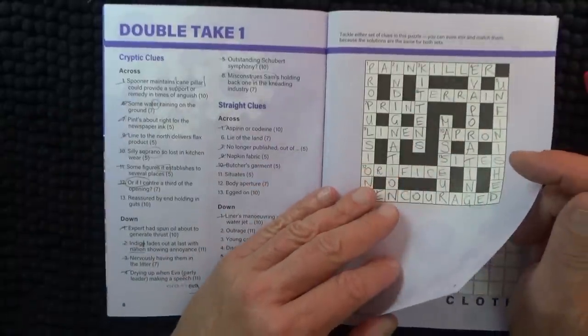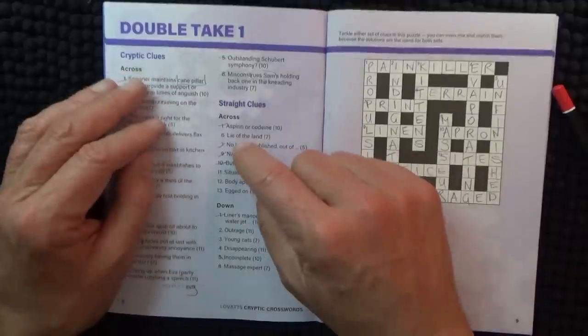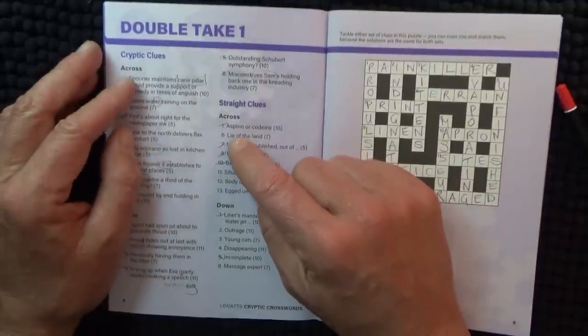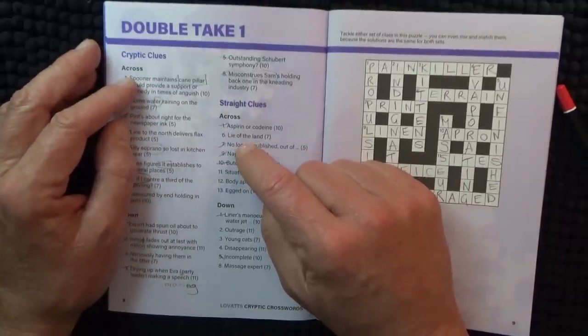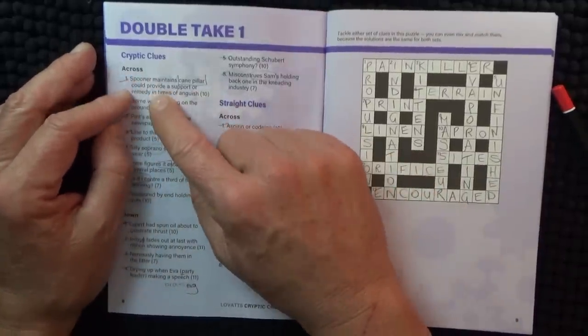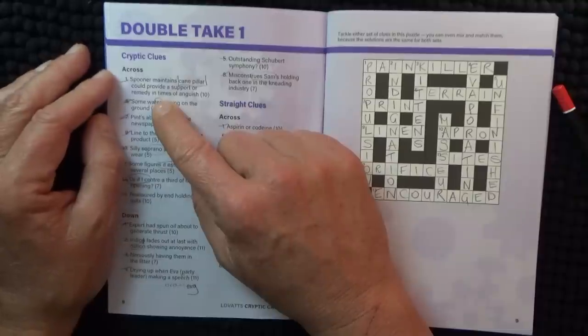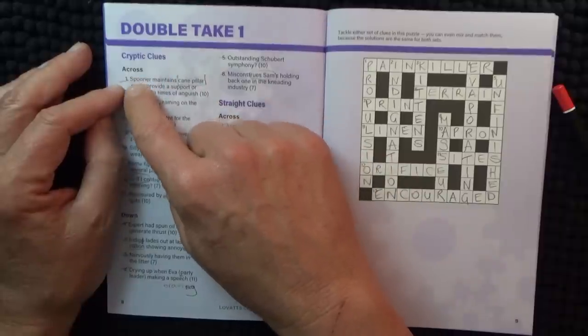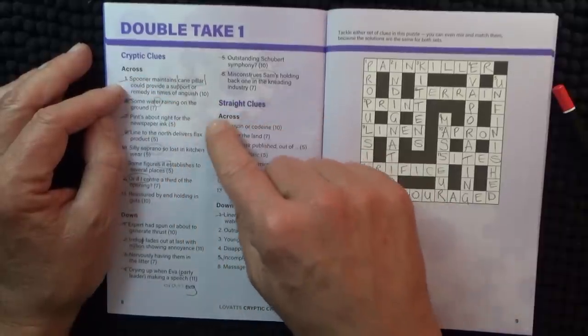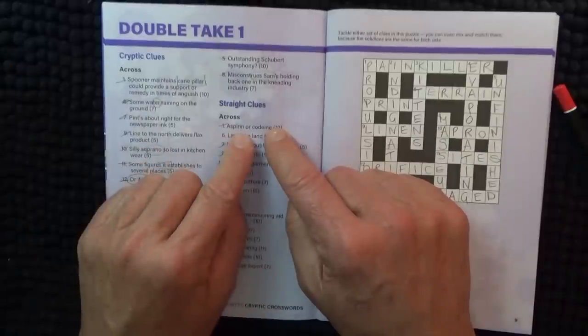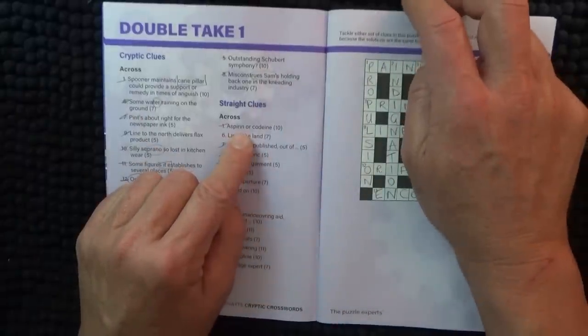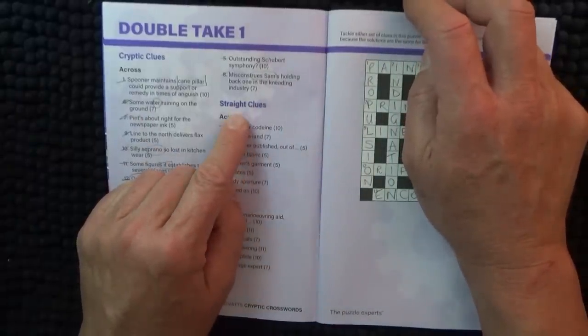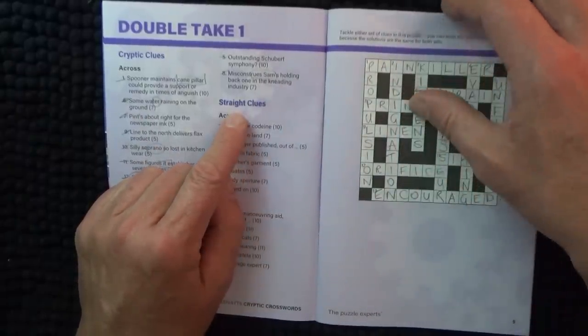And then aspirin or codeine is also a painkiller. So what I wanted to say was this is great if you're learning to do cryptics because you might sort of think what the answer might be, and then you've got to double check from the regular clues or what they're calling the straight clues.